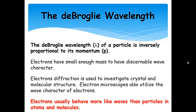Now, the de Broglie wavelength of a particle is inversely proportional to its momentum. So, electrons have small enough mass to have discernible wave character. Now, this is actually used in electron diffraction, and we can use that to investigate crystal and molecular structure. And also, electron microscopes make use of the wave character of electrons in order to investigate the surfaces or the structure of various materials. Now, electrons usually behave more like waves than particles in atoms and molecules.